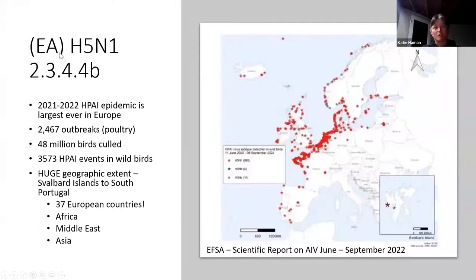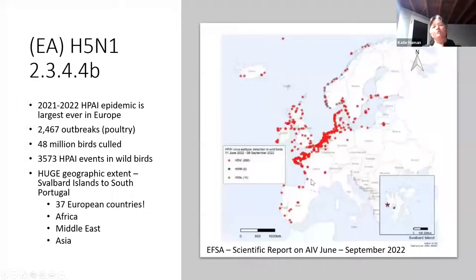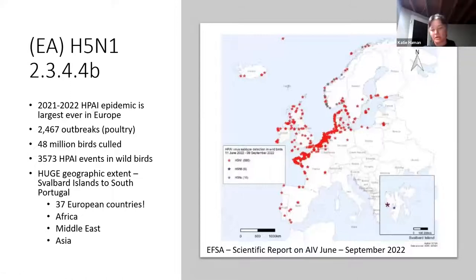In contrast, H5N1 2.3.4.4b — the European strain — has pretty much become an epidemic in Europe. From the EFSA's scientific report, all of these red dots are H5N1. Over 48 million birds have been culled in Europe, and they've seen about 3,500 events in wild birds. Beyond Europe, there's been a huge geographic extent — 37 European countries, Africa, the Middle East, Asia, and now North America. We are dealing with something quite different.